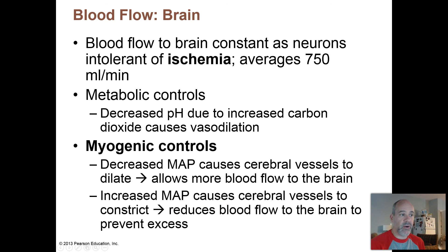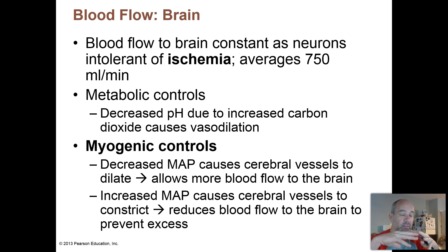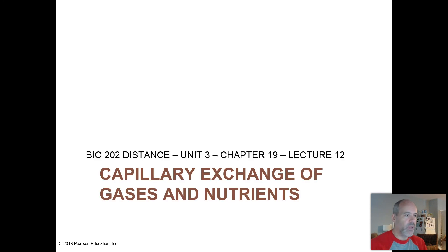The opposite occurs with increased mean arterial pressure, such as during vigorous exercise. Because blood is flowing very quickly, your cerebral blood vessels will actually constrict to help reduce some of that flow to the brain, maintaining a constant blood flow of about 750 milliliters per minute. If that didn't work and cerebral vessels stayed at normal diameter as blood pressure rose during exercise, increased pressure could squeeze too much fluid out, causing cerebral edema — making us prone to brain swelling every time we exercise vigorously.